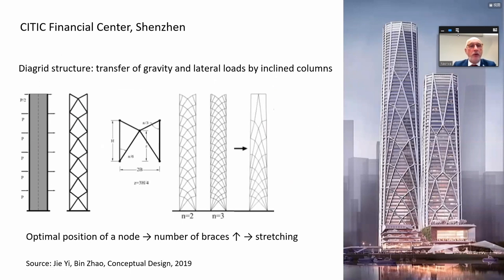An application of the same principle can be found in the CITIC Financial Center in Shenzhen, where you see this typical diagrid structure used to transfer gravity and lateral loads by inclined columns. The optimization starts from the optimal position of one of the basic nodes, then the number of braces is increased and a stretching is applied, and finally we result in this very aesthetic concept.